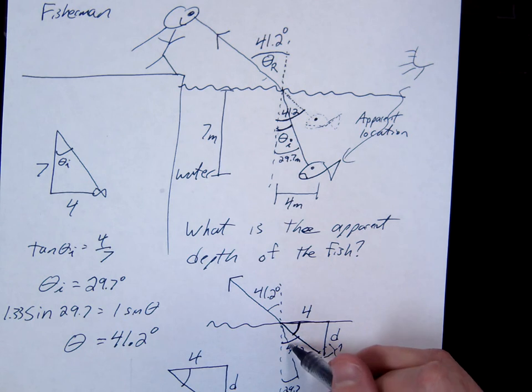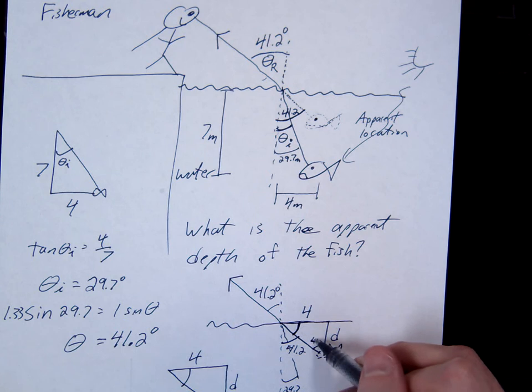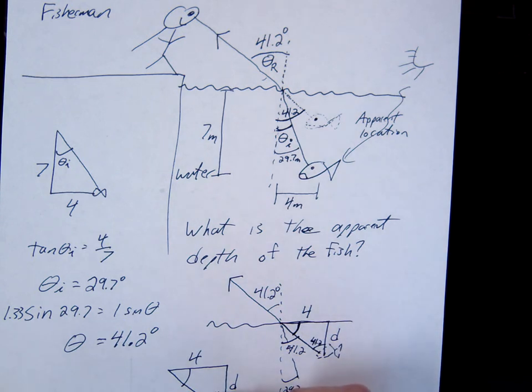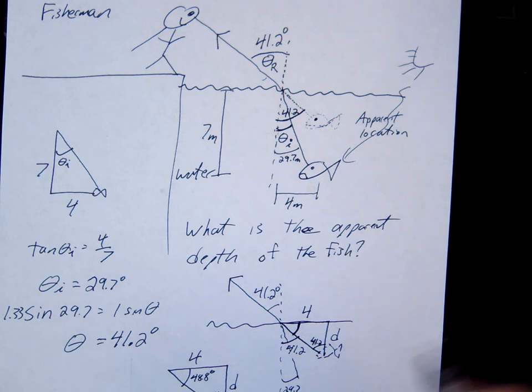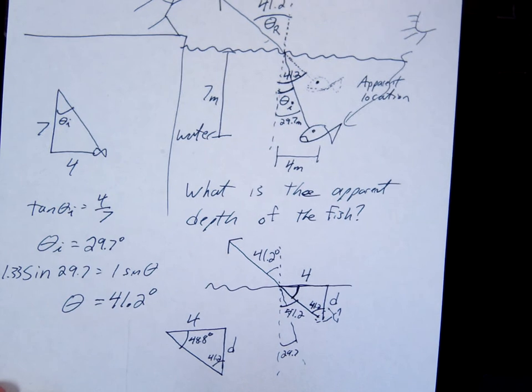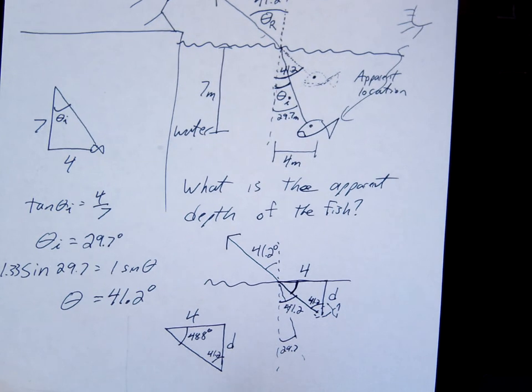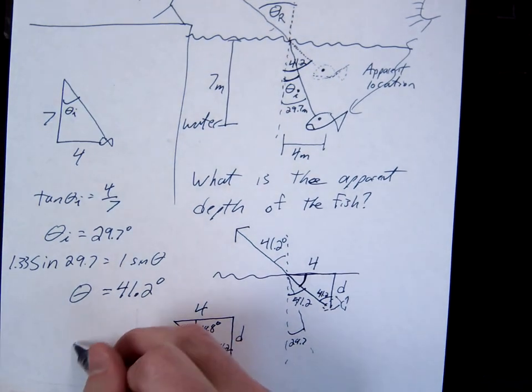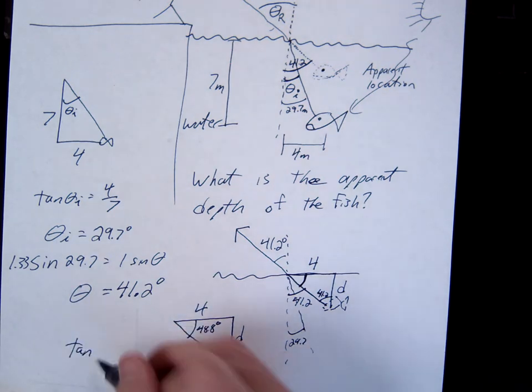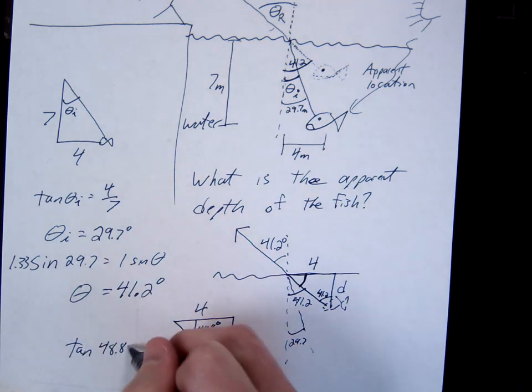Or another thing you could do is say, if this is 41.2, then this is 41.2. So however you want to look at it, this is 41.2. This one would be 48.8. We'll just use it to point to you. It depends how you've been rounding. So 48.8 right there. So solve your triangle, however you want to do it. Let's do tangent. Tangent of 48.8 equals D over 4, opposite over adjacent. Solve for D.